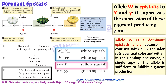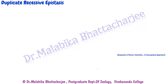The W allele is dominant. In the previous cases — Labrador and Bombay phenotype — two recessive alleles acted as epistatic alleles (small a, small a and small h, small h). Now coming to duplicate recessive epistasis. When talking about two genes, we have two sets of recessive alleles. One recessive allele is epistatic to the other allele.